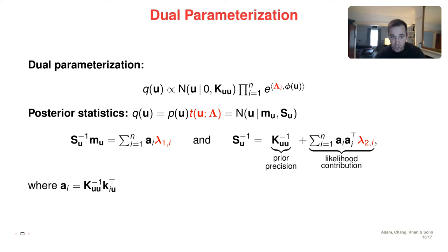So if you take this product, the prior times the sites, we end up with a Gaussian which has mean and covariance that can be written in a way that allows to understand this dual parameterization. If you look on the right, the precision, so the inverse of the covariance, can be expressed as the prior precision, the inverse of the kernel covariance matrix, plus some terms that depend on the data. So the contribution of the data arrives through a sum of outer products. This vector ai outer product, so ai ai transpose, is a rank one matrix. And for the first order term, it's also a sum. You should think of this as the natural parameter of this parameterization.